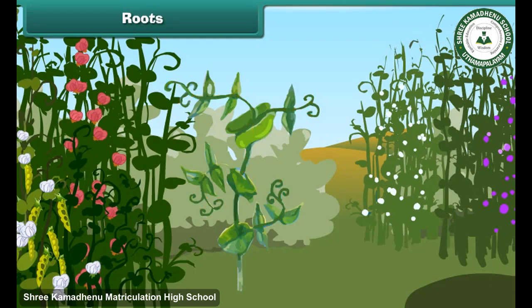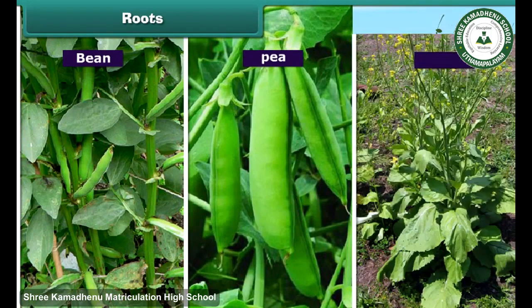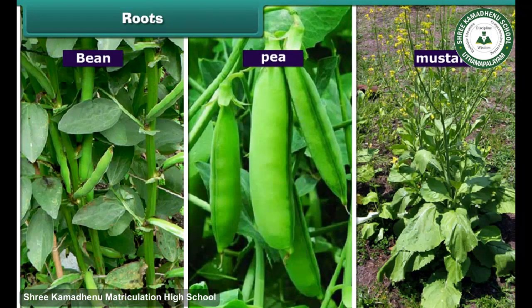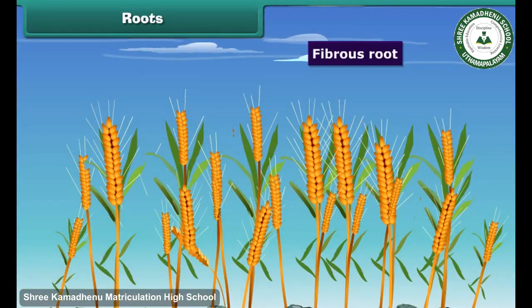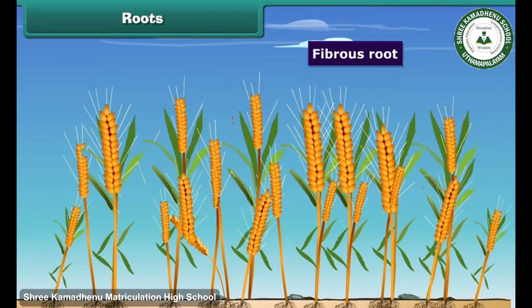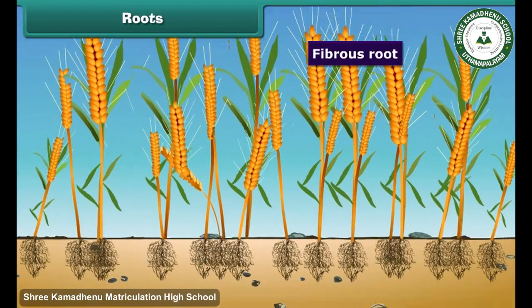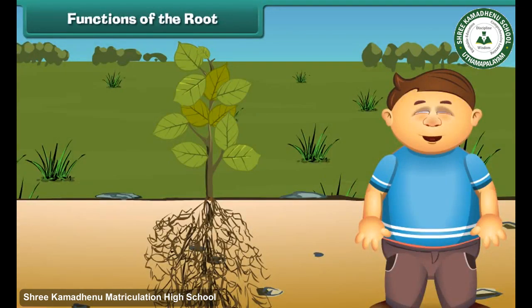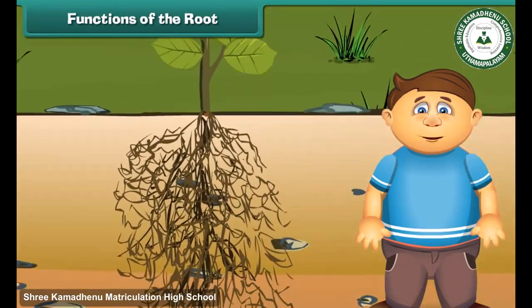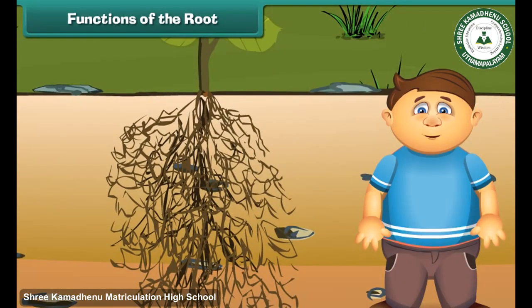Tap roots are generally found in bean, pea and mustard plants. In a fibrous root, a number of almost equal-sized roots are attached to the end of the stem — there is no main root like a tap root. This kind of root is present in grass and wheat. We have now learnt the structure and types of roots, but what are the functions of the roots?